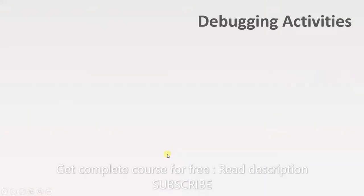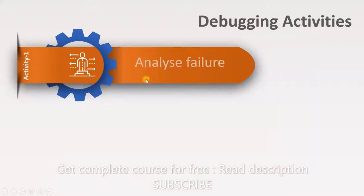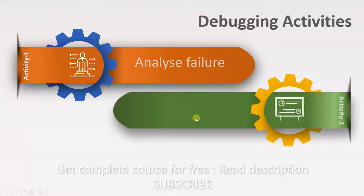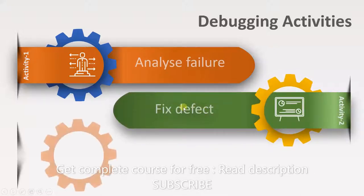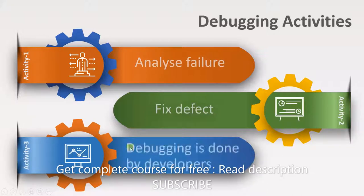Now we move on to debugging activities. The first one here is to analyze the failure reported by the tester. After your analysis is done, you have to fix the defects. Debugging is done by developers, so the developer is responsible for analyzing the problem and fixing it.